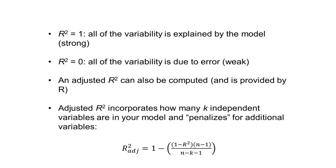Other ways to interpret that: if R squared is 1, all of the variability is explained by the model. If it's 0, all the variability is due to error and you have a weak model.